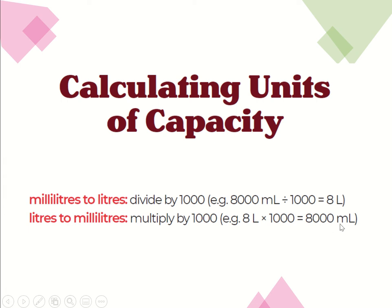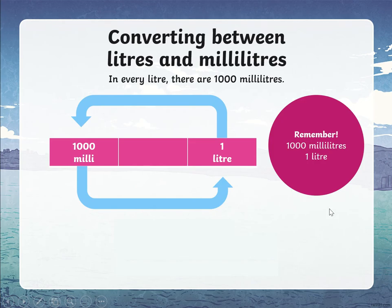Now if you are swapping between units and trying to find how many liters from milliliters — changing milliliters to liters — then you divide by 1,000. For example, if you've got 8,000 milliliters and you're trying to figure out how many liters, you just divide by 1,000. You take away the three zeros — one, two, three — and that gives you 8 liters.